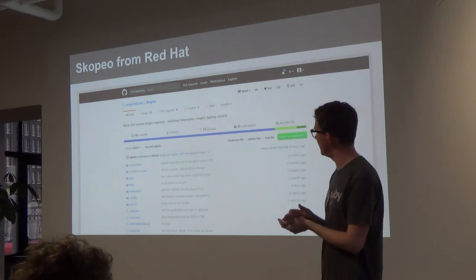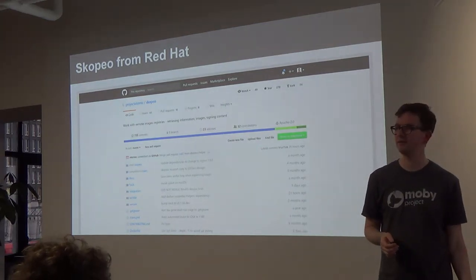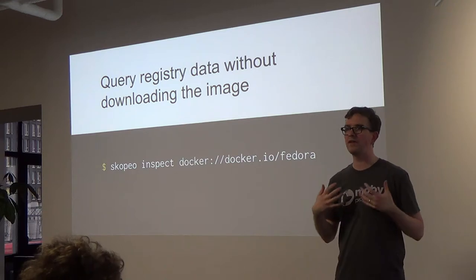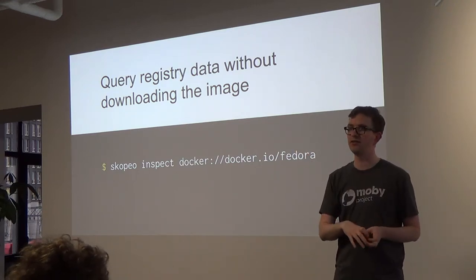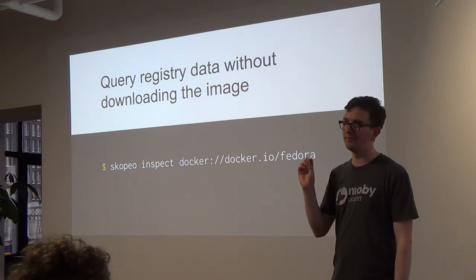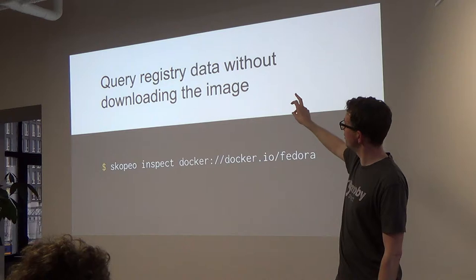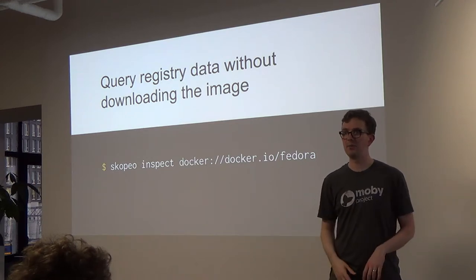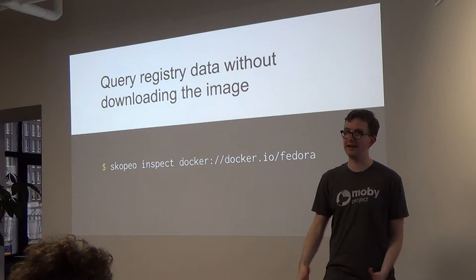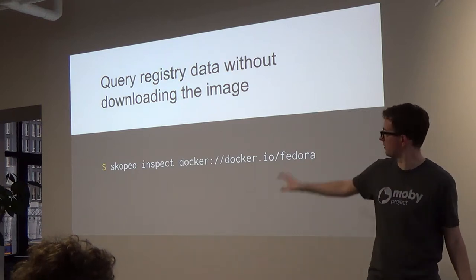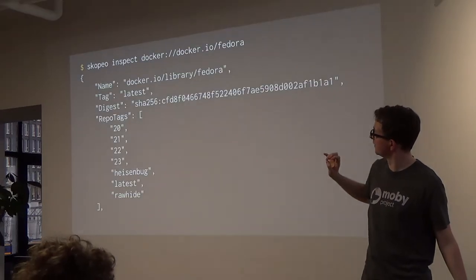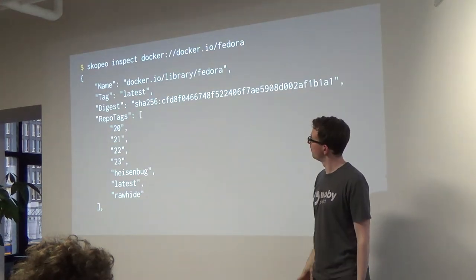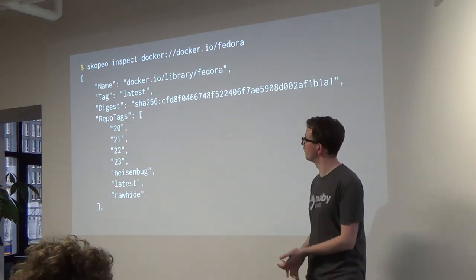Let me talk about a few tools that are interesting here. There's Scotia from Red Hat — I don't think anyone here has seen it. Whether you're using Hub or an internal repository, Scotia allows you to query registry data without downloading the image. That's faster, and you're not downloading something before knowing anything about it. It's a command-line tool that gives you a bunch of data from the repository.